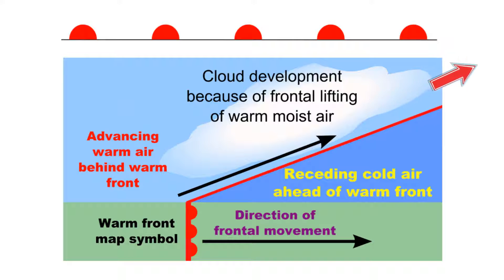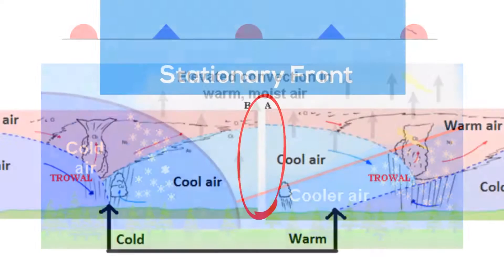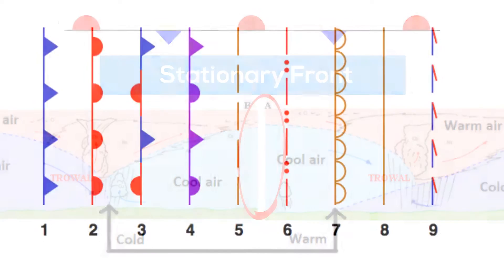An occluded front has both a circle and a triangle, and they both point in the direction of movement. Finally, a stationary front has triangles on the side of the cold front and circles on the side of the warm front — they are stationary and don't move.